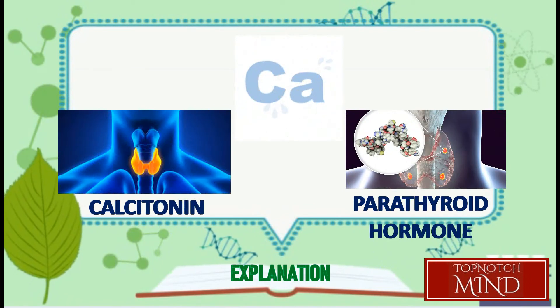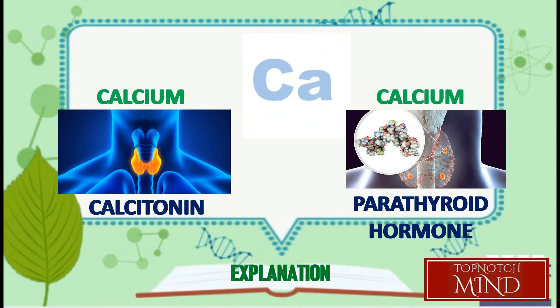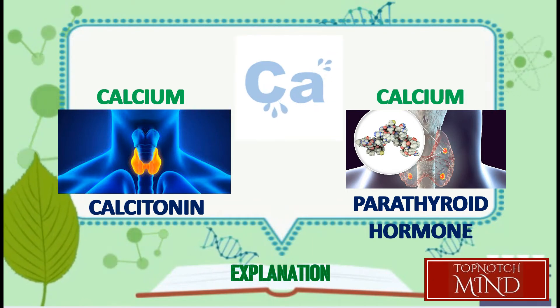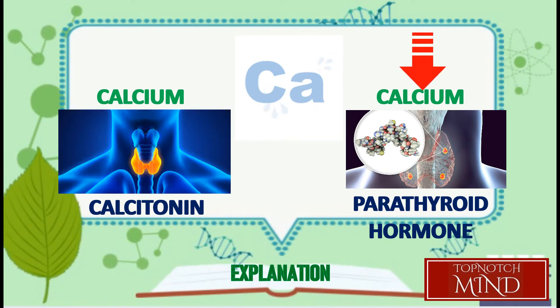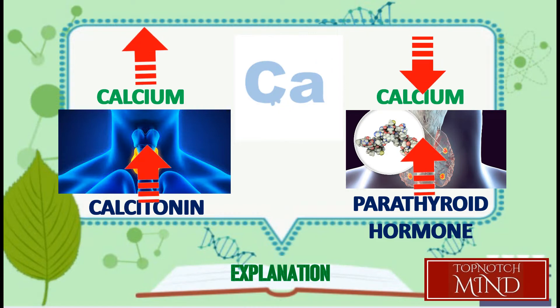The secretion of both calcitonin and parathyroid hormone play a key role in the regulation of calcium levels in the blood. When levels of calcium in the blood decrease, parathyroid hormone is secreted in higher quantities. On the other hand, when levels of calcium in the blood increase, this causes the amount of calcitonin secreted to increase too.